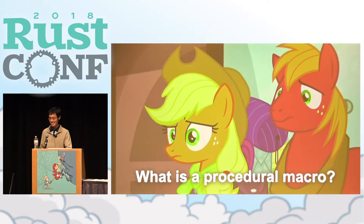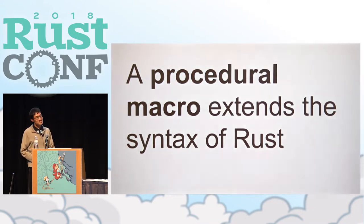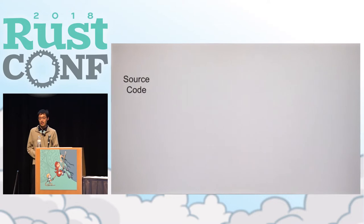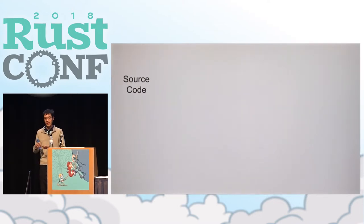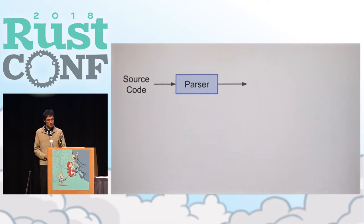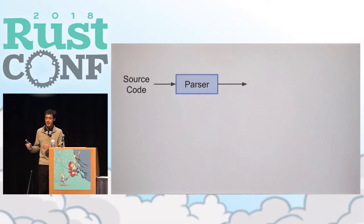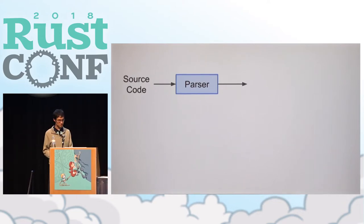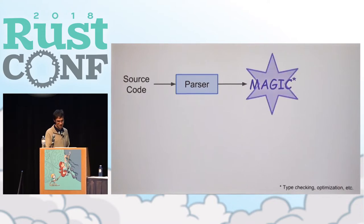So first off, what is a procedural macro exactly? In a single sentence: a procedural macro extends the syntax of Rust. When you tell the Rust compiler or Cargo to compile your code, you start with the source code and the first place it goes is into the parser, which takes your source code and converts it into a form that's easier for the rest of the compiler to understand. Magic happens after that, and after all that we get the finished binary.